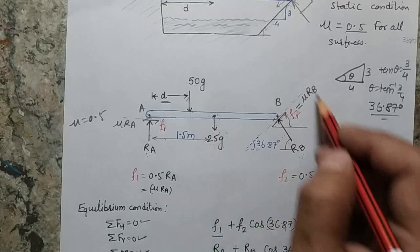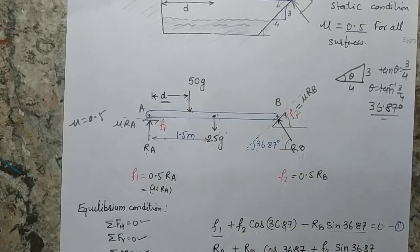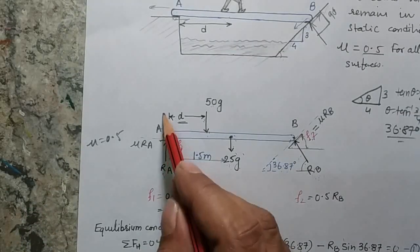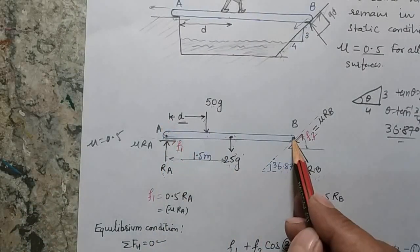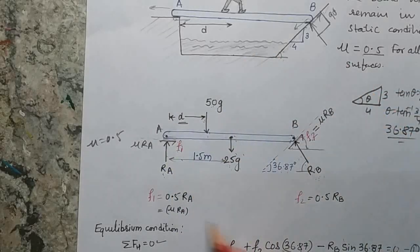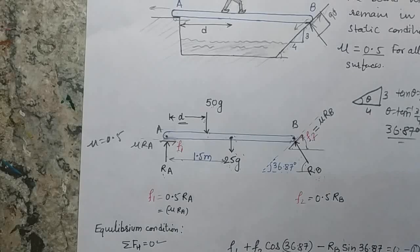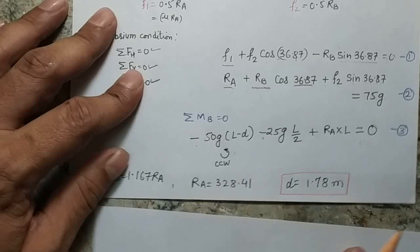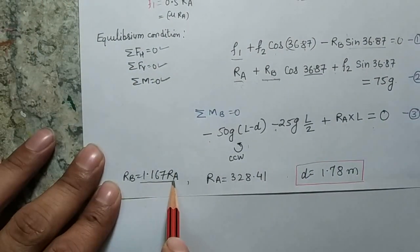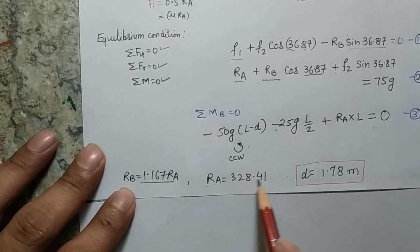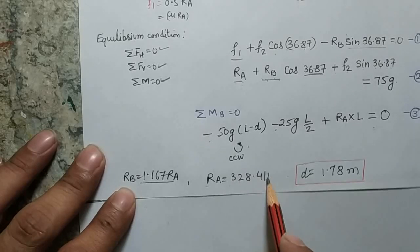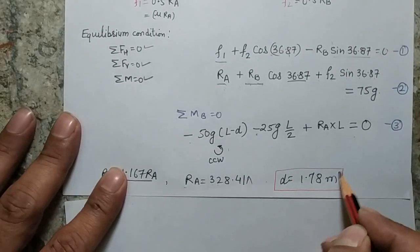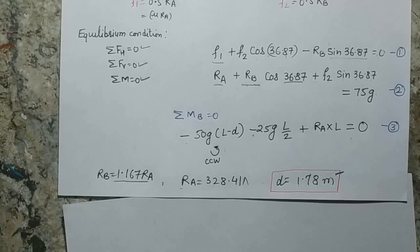The moments due to 50g and 25g are both counterclockwise, taken as negative. Ra acts upward, producing a clockwise moment at point B. Solving these equations gives Rb = 1.167·Ra and Ra = 328.41 Newtons. Substituting into the moment equation gives d = 1.78 meters.